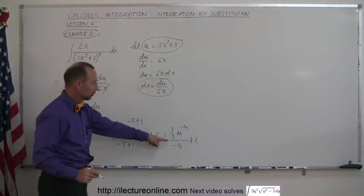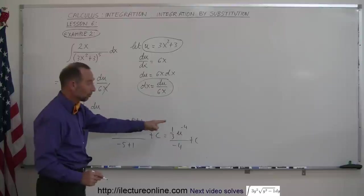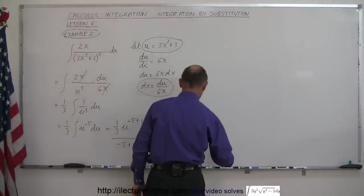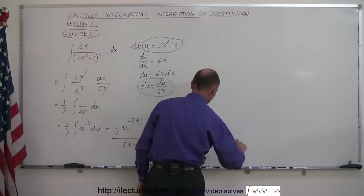So now we're going to take 1/3 divided by negative 4, that's 1 over negative 12. And u to the minus 4 can then be written as 1 over u to the 4th. So this equals negative 1/12 times 1 over u to the 4th, plus a constant of integration.